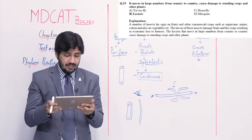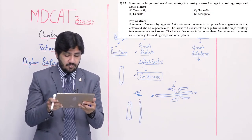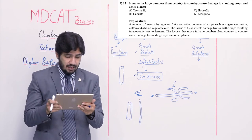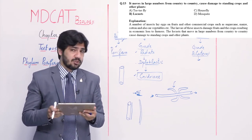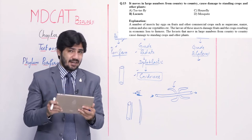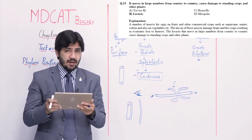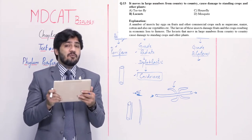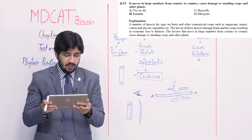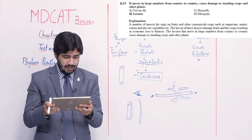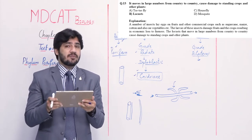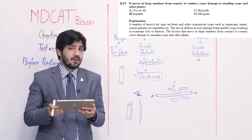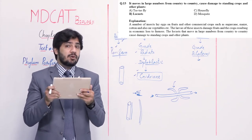Question number 13: it moves in large numbers from country to country causing damage to standing crops and other plants — alpha tse-tse fly, beta locust, charlie house fly, and delta mosquito. Tse-tse fly is a vector for Trypanosoma and doesn't move country to country. Locust moves and damages crops, so right option is beta. House fly doesn't move country to country or damage crops.